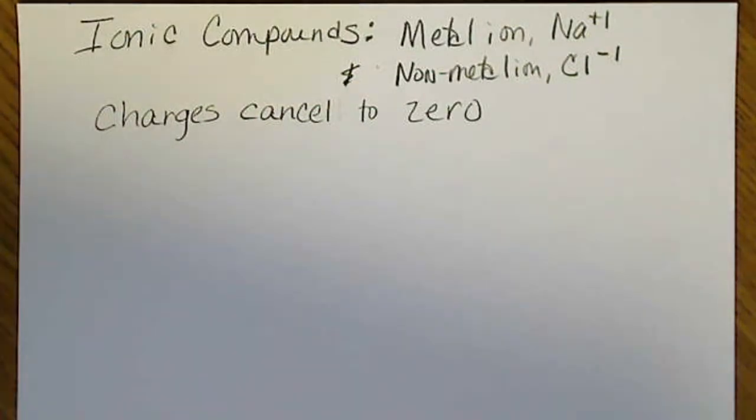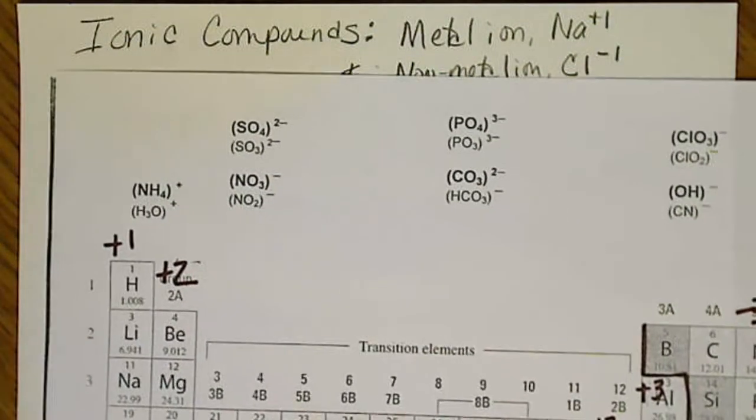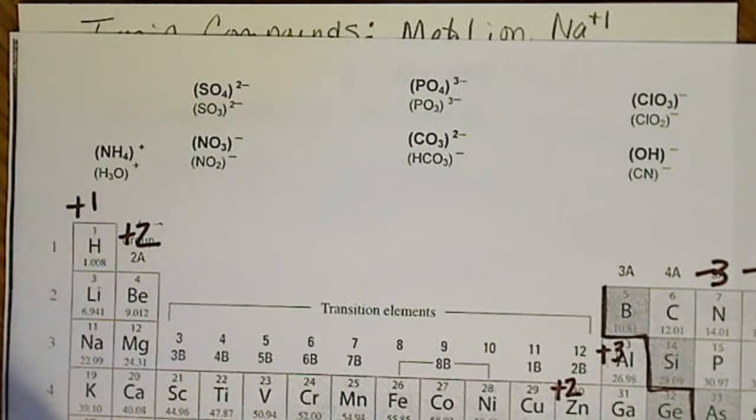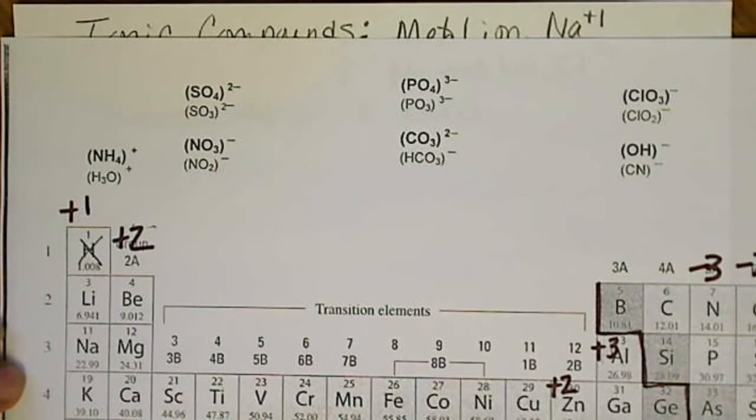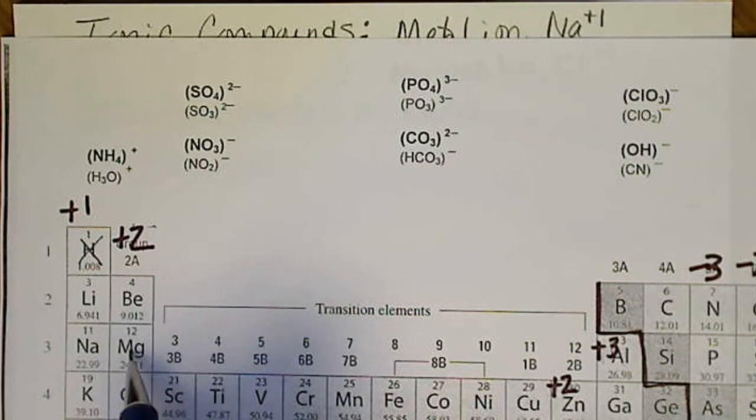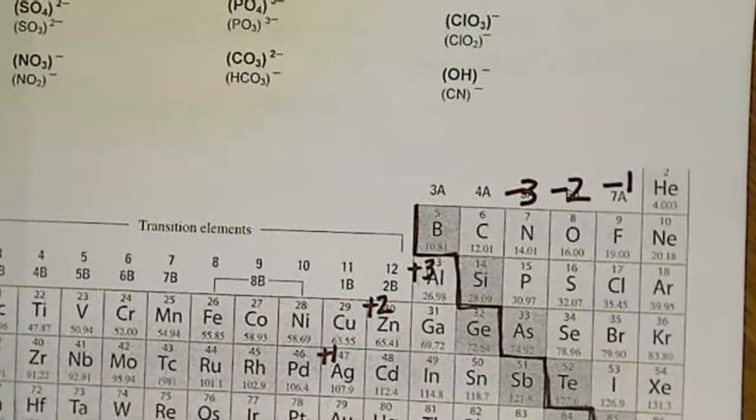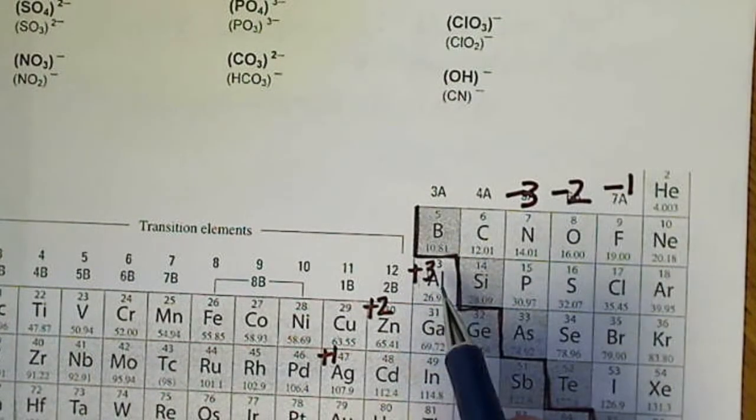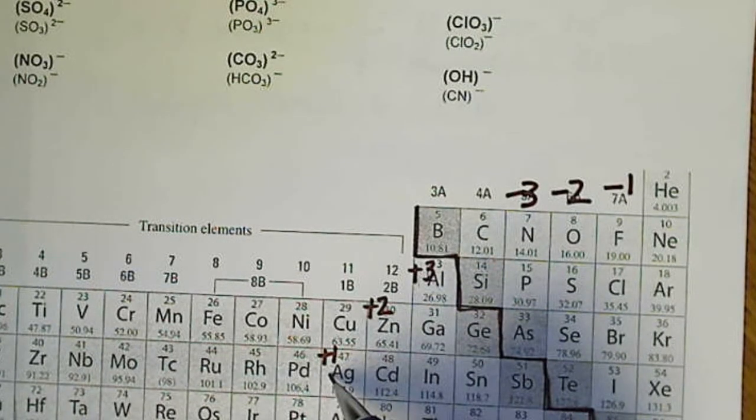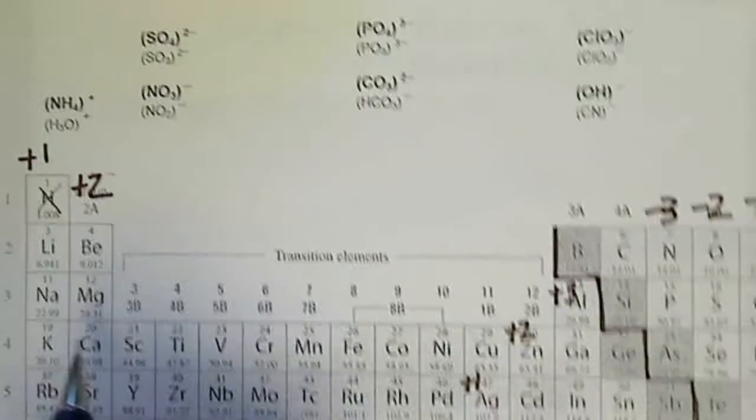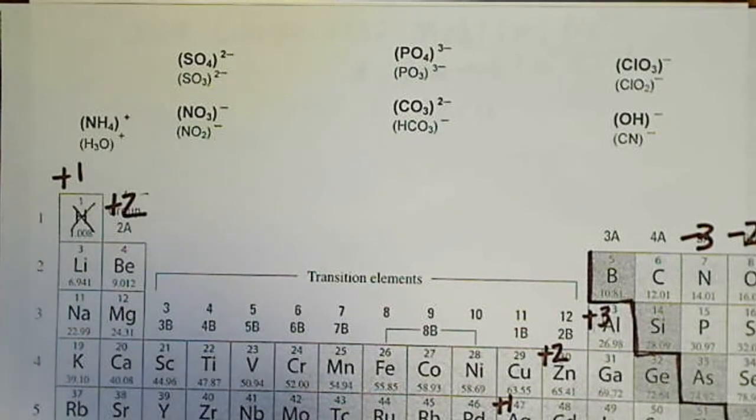So from the periodic table, remember we're going to take column 1 and put a plus 1 above it. Hydrogen's not going to be a metal, though, so we'll ignore hydrogen. Column 2, we're going to put a plus 2. We're going to skip to aluminum and put a plus 3, and then a plus 2, and a plus 1. So these are simple metals because there's only one possible charge.